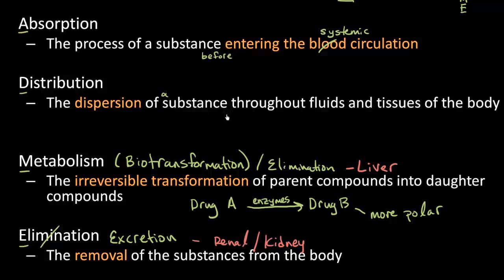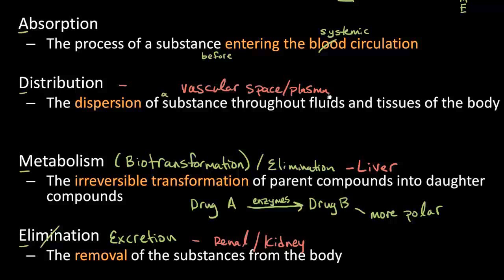Distribution. So distribution was dealing with things going from one place to another after they're in our systemic circulation. So where is this occurring? What I want you to attach to distribution — I want you to think the first place it starts is in our vascular space. What's our vascular space? That's our blood or our plasma.